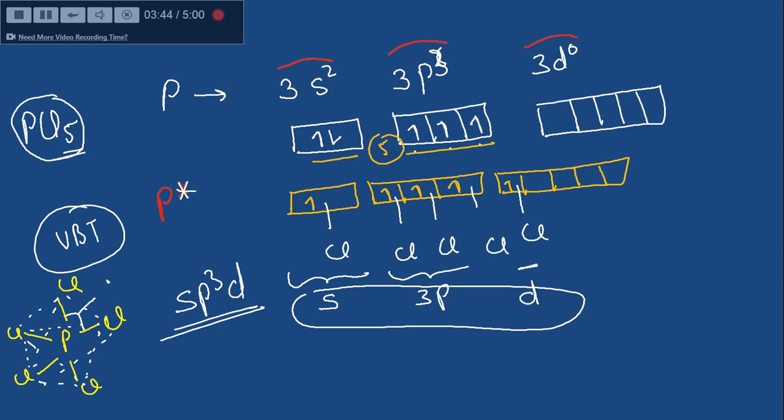And there are two different bond angles, one is of 90 degrees, another is of 120 degrees. I hope these things were clear to you, and stay tuned for more videos of organic, inorganic, and physical chemistry, and don't forget to subscribe.